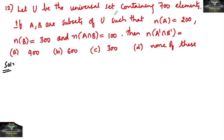Let U be the universal set containing 700 elements. If A and B are subsets of U such that n(A) = 200, n(B) = 300, and n(A ∩ B) = 100, then n(A' ∩ B') is equal to?